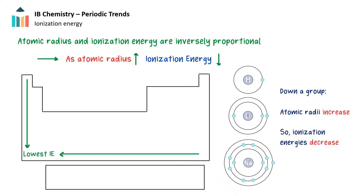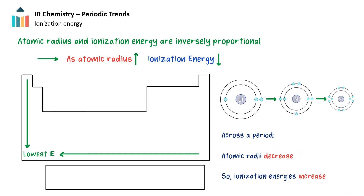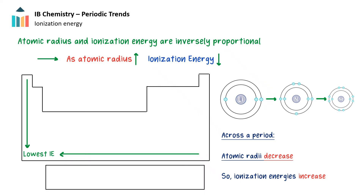The ionization energy depends on how strongly the outermost electron is attracted to the nucleus. As the atomic radius increases, this attraction becomes weaker, so the ionization energy decreases. Down a group, the number of shells increases and atoms become larger, so the outermost electron is further from the nucleus and the electrostatic attraction is weaker — hence ionization energy decreases down a group. When going across a period, the number of valence electrons increases but the number of shells stays the same. Therefore the electrons in the outer shell are attracted by a nucleus with a greater positive charge, the atom becomes smaller, and the ionization energy increases.